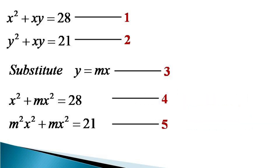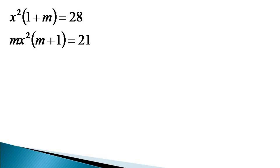Taking x² common from equation 4 on the left-hand side, and mx² common from equation 5 on the left-hand side, we get another equivalent set of simultaneous equations: x²(1 + m) = 28 and mx²(m + 1) = 21. We again number these equations as 6 and 7.